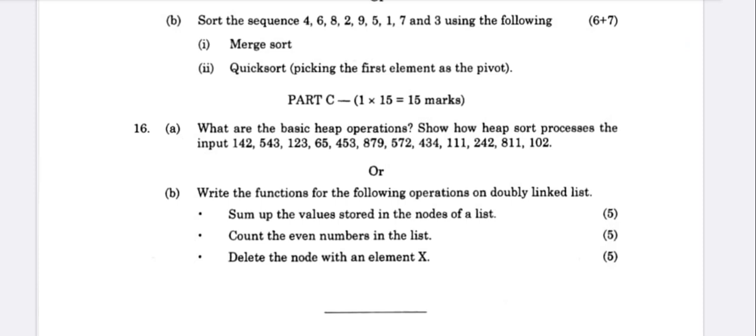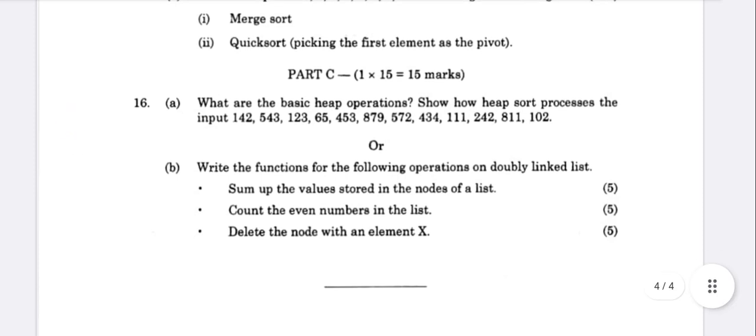Write the function for the following operation on doubly linked list: three questions - sum up the values, count even numbers in the list, delete the node with element X.